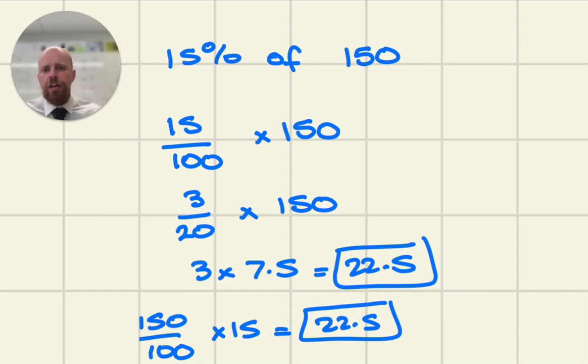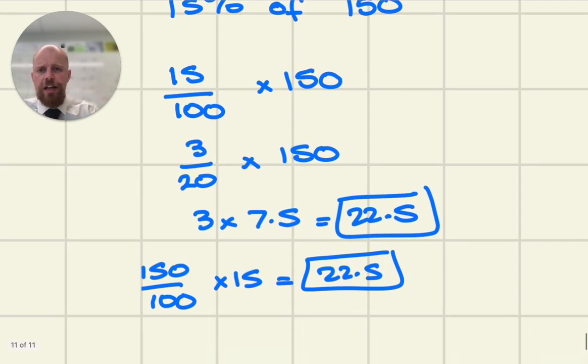Without a calculator, another way of doing it, if this isn't a nice set of numbers, is like this. Let's say we have 13% of 72.